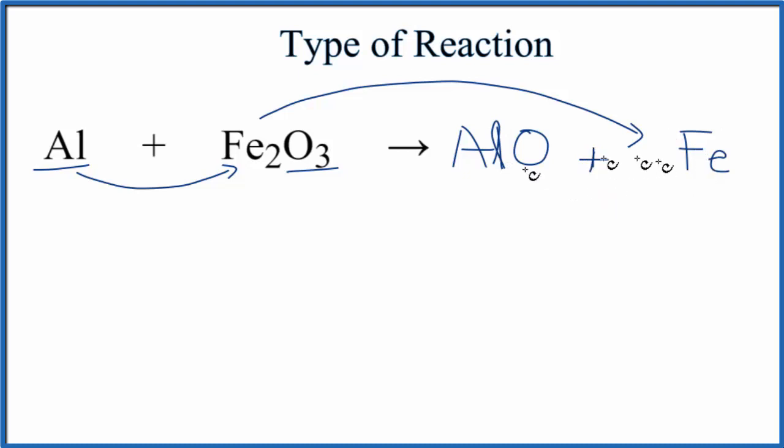So that would be a single displacement reaction. But the charges aren't right here. We need to balance the charges, and we would need to balance the equation as well. So let's look at this. Aluminum forms three plus ions. If you look on the periodic table, it's in group 13. And oxygen always forms two minus ions. So to balance the charges, we can use the crisscross method. We could put the two here and the three here.